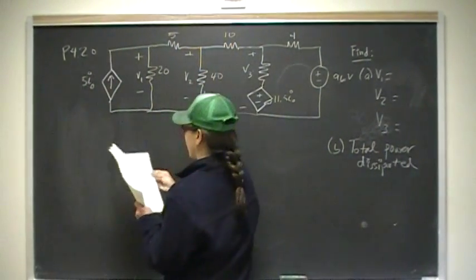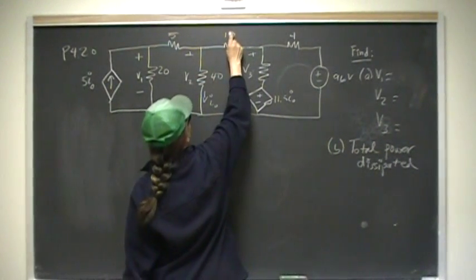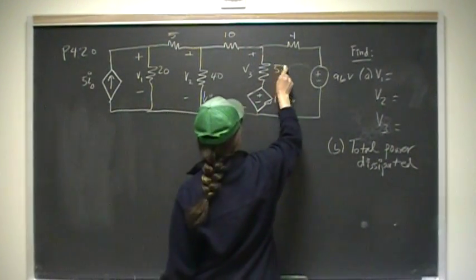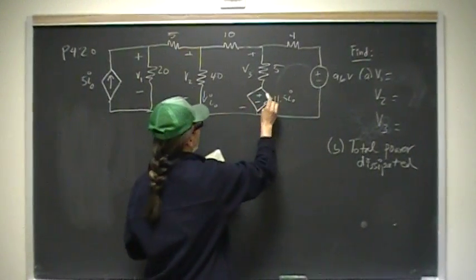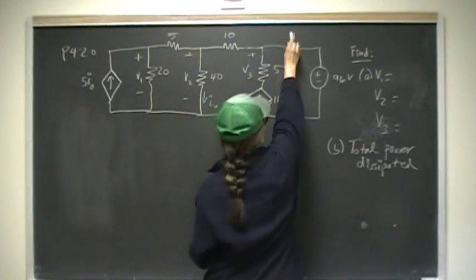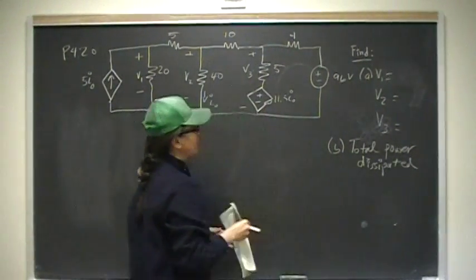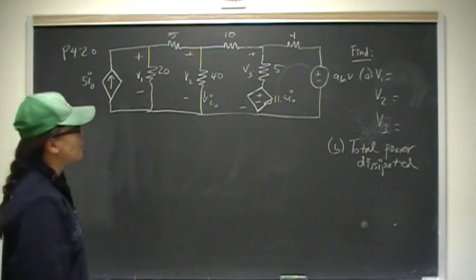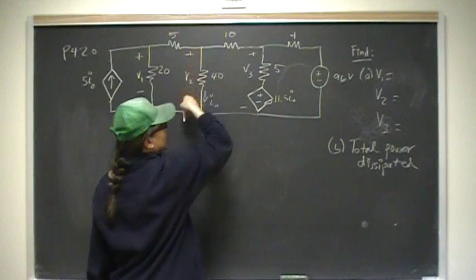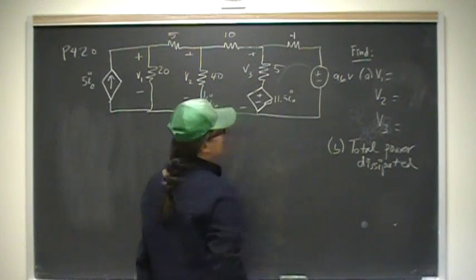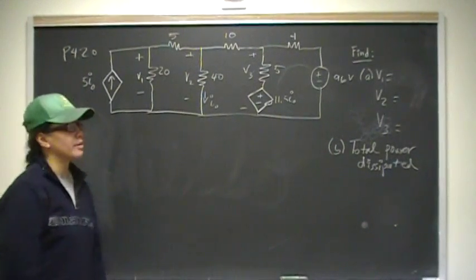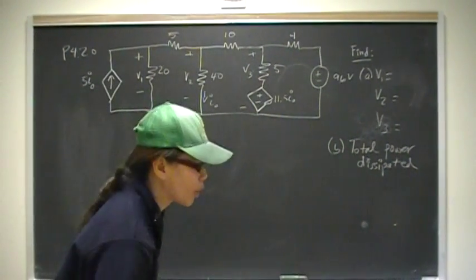That's a 10 ohms there. This is 5 ohms, and we have a dependent voltage source with value 11.5 times I₀. 4 ohms is here, and a 96 volt independent voltage source. We want to find V1, V2, and V3 for part A. We also want to find the total power dissipated by the system in part B.